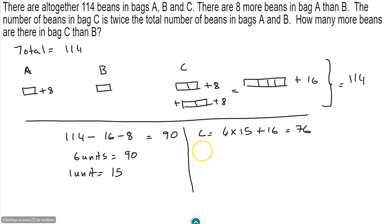In bag B, you have 15. So bag C minus bag B will give us our answer, which is 76 minus 15, which is 61. So the answer is 61 more beans in bag C than in bag B.